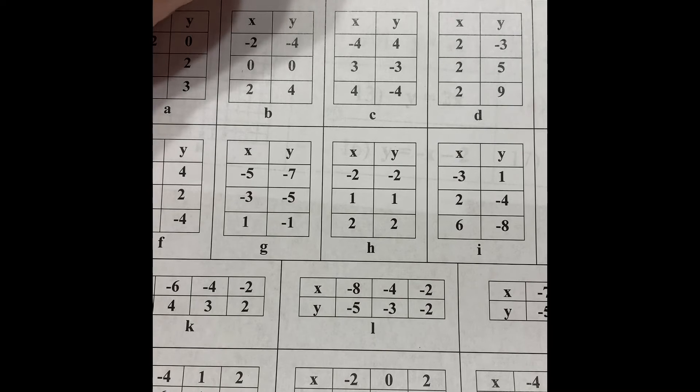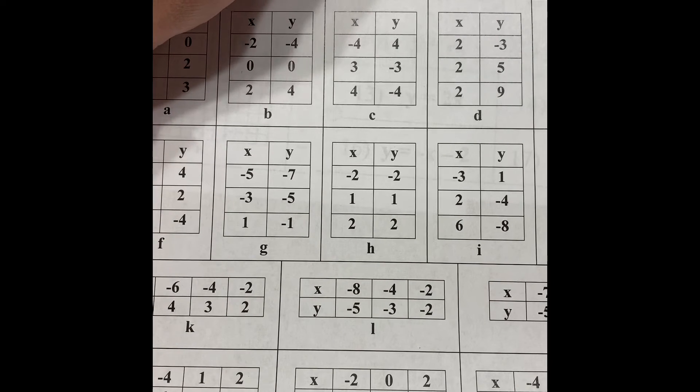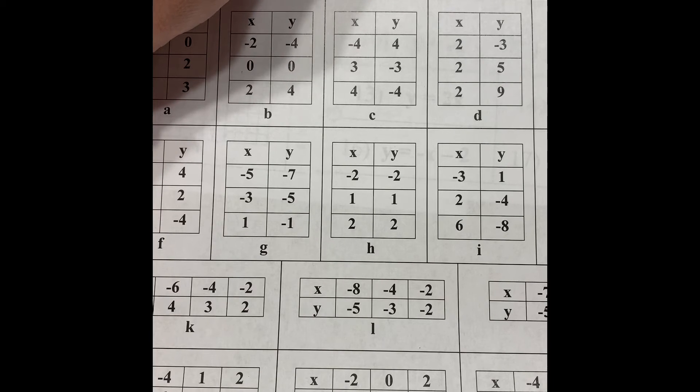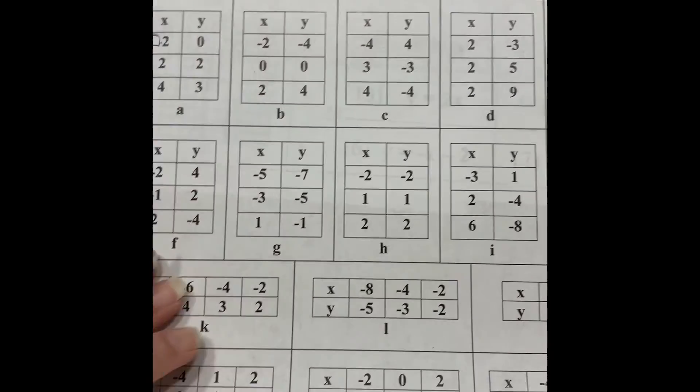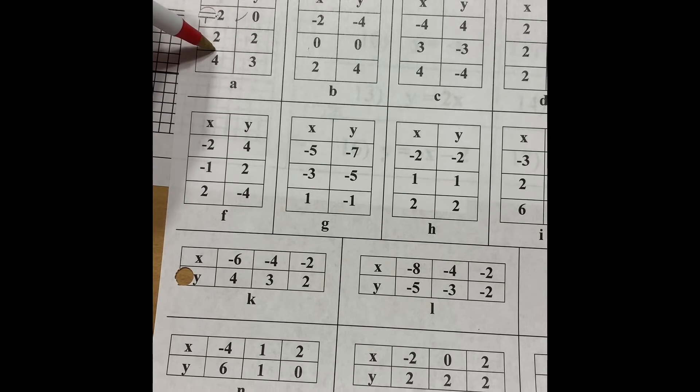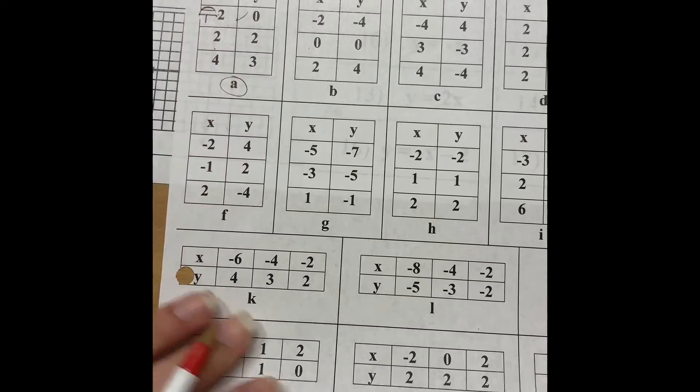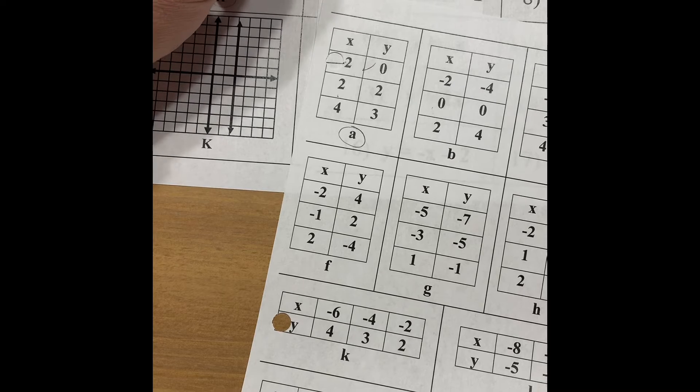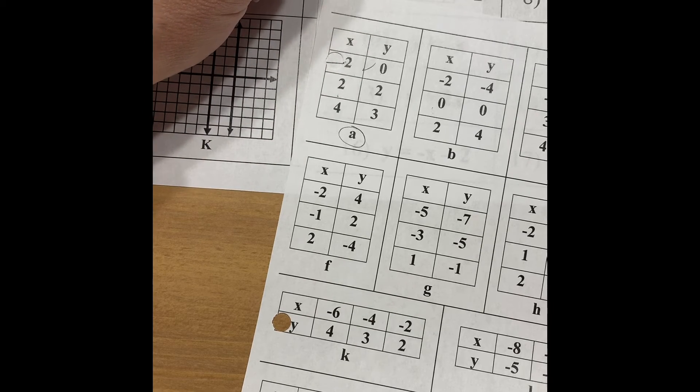If y is zero, we move the one over: negative one equals one-half x. Multiply both sides by two, so x equals negative two. When y is zero, x is negative two — and checking the table, it is negative two. Let's verify: when x is two, one plus one gives y equals two; x is two, y is two. When x is four, four divided by two is two, two plus one is three, y is three. So table lowercase a works with graph H and equation number one.